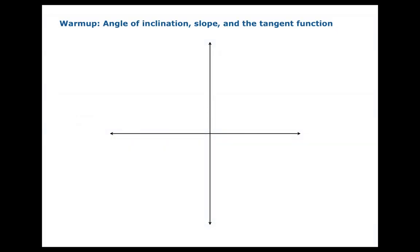To warm up, let's review some terminology. Suppose we have a line through the origin, and we'll measure the angle from the positive x-axis to the line. We'll call that angle theta, the angle of inclination of the line.